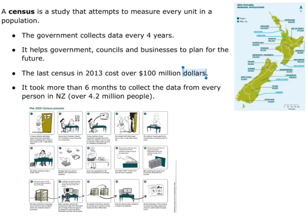Now if we talk about a census — this is a specific type of study where every person in the entire population has been measured or counted. For example, in New Zealand we collect the census every four years. The government does this to get information to work out what they need to do in terms of planning.